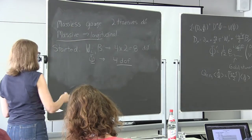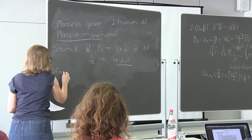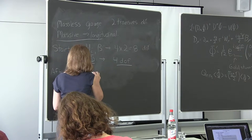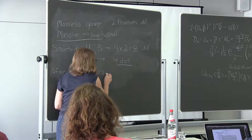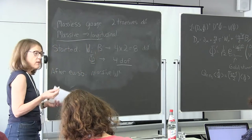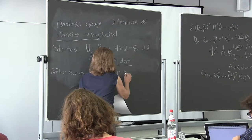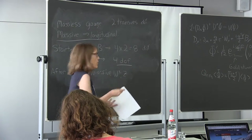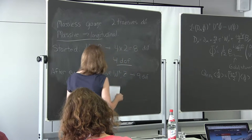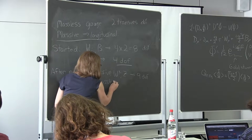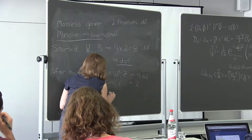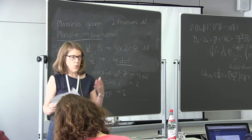After electroweak symmetry breaking, we have a massive W⁺ and W⁻ and a massive Z — three massive gauge bosons, each with three polarizations (including longitudinal), giving 9 degrees of freedom. We have the massless photon with two transverse polarizations. And we have the Higgs. Everything works out: 9 + 2 + 1 = 12 degrees of freedom.